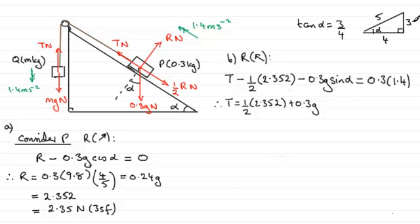And then plus 0.3g times sine alpha. The sine alpha is opposite over hypotenuse. So that's going to be 3 fifths. So 0.3g times 3 fifths. And then we've got plus 0.3 multiplied by 1.4. So if you work this out in your calculator, take g to be 9.8, you'll find that therefore, t turns out to be exactly 3.36 newtons.